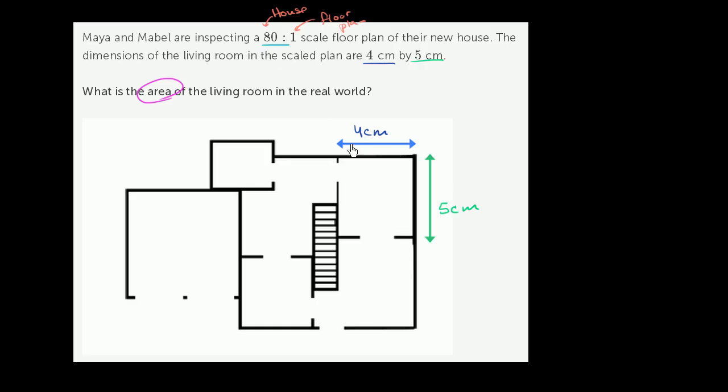If the floor plan for this dimension of our living room is 4 centimeters, the actual house will be 80 times that. 80 times 4 is 320, let me do that in a blue color, is equal to 320 centimeters. We can do the same thing for the length of the living room. So 80 times 5 centimeters is 400 centimeters.